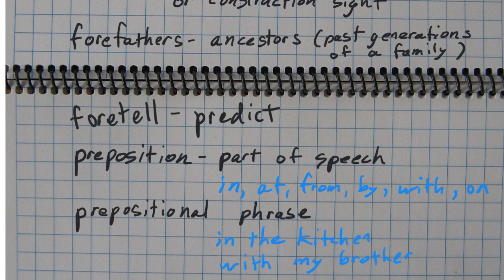And you might hear the term prepositional phrase. So that's a preposition and you're usually using a noun connected to it to show the relationship. So in the kitchen, with my brother, by my desk, at the store, those would be prepositional phrases where you're using a preposition and connecting it to other words.